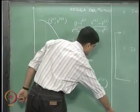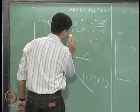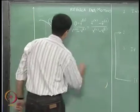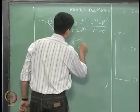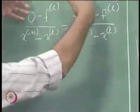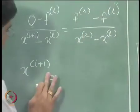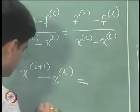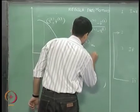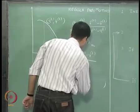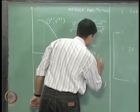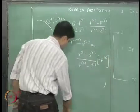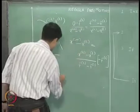We can rearrange this equation in order to get the particular solution for x_{i+1}. That solution is: x_{i+1} minus x_l is going to be equal to x_r minus x_l divided by f_r minus f_l, multiplied by minus f_l.